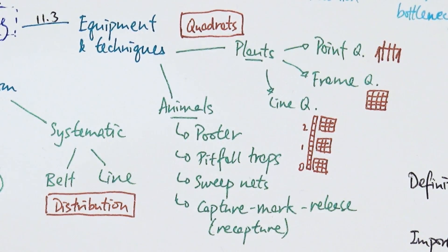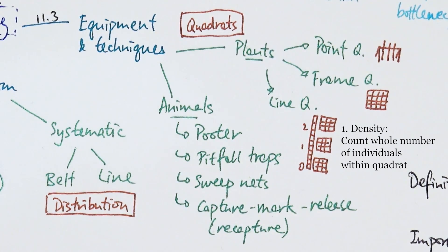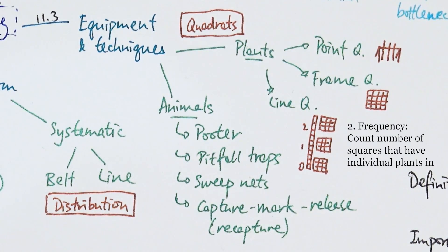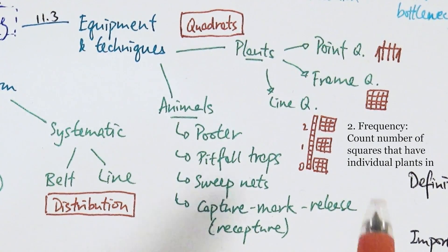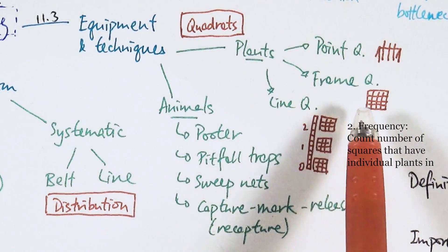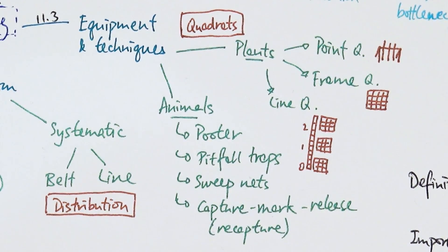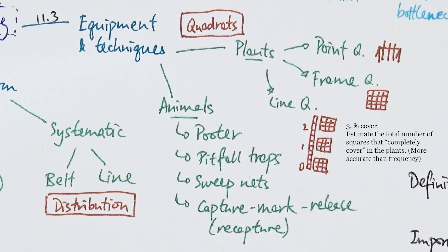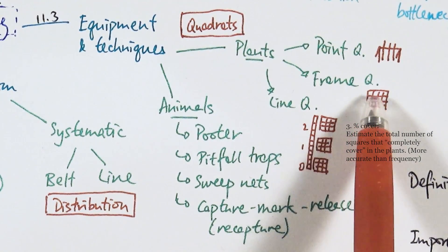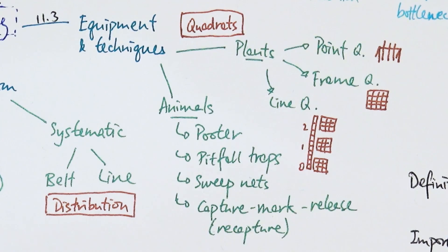There are three ways to use a frame quadrat. First, measuring density—simply counting the number of individuals within your frame. Second, measuring frequency of appearance if it's a smaller plant with many individuals, counting how many squares within the frame have that particular plant existing in it. Third, percentage cover if it's a plant with lots and lots of individuals, like grass. You can't count individual grass but you can count the percentage of grass cover within the frame quadrat.